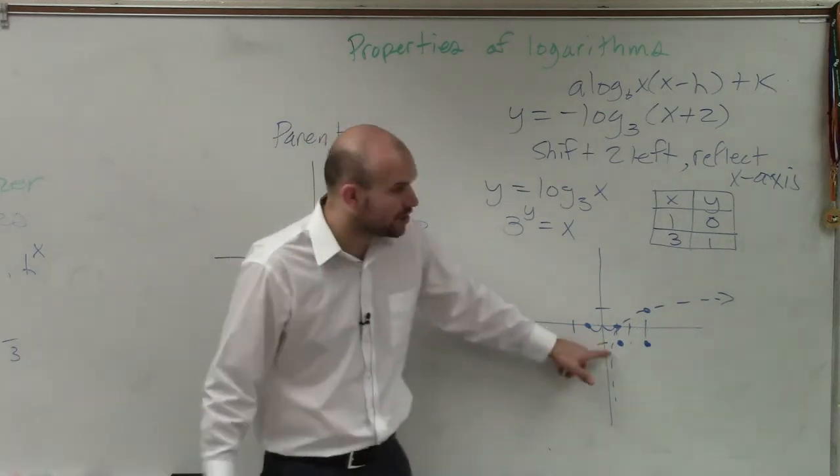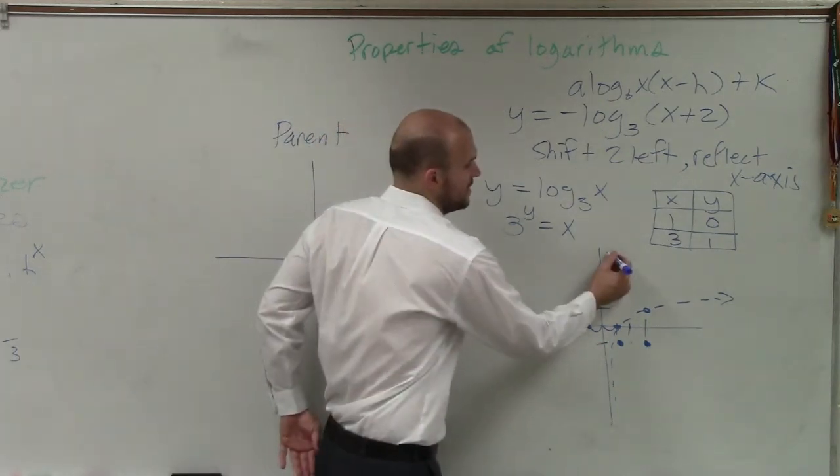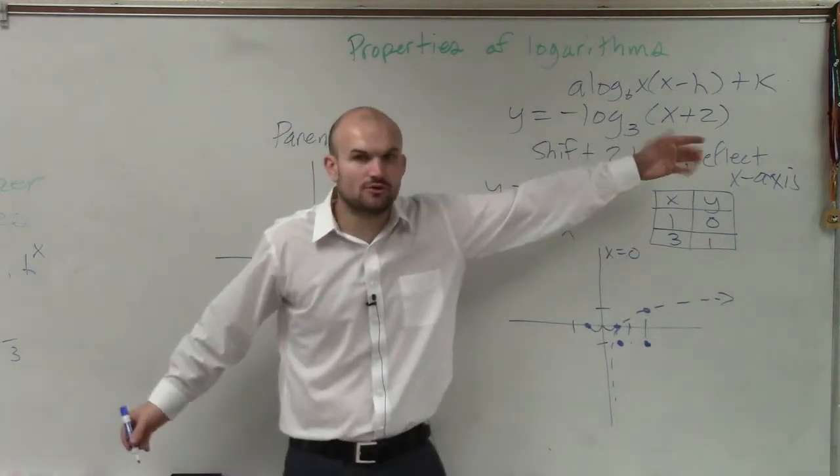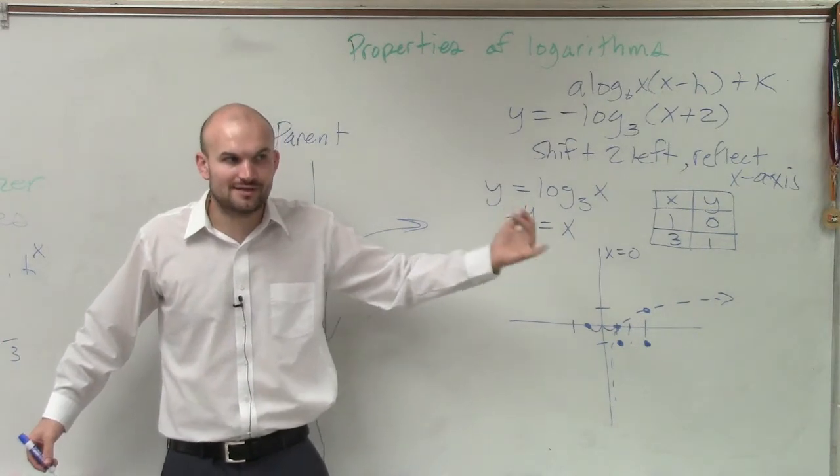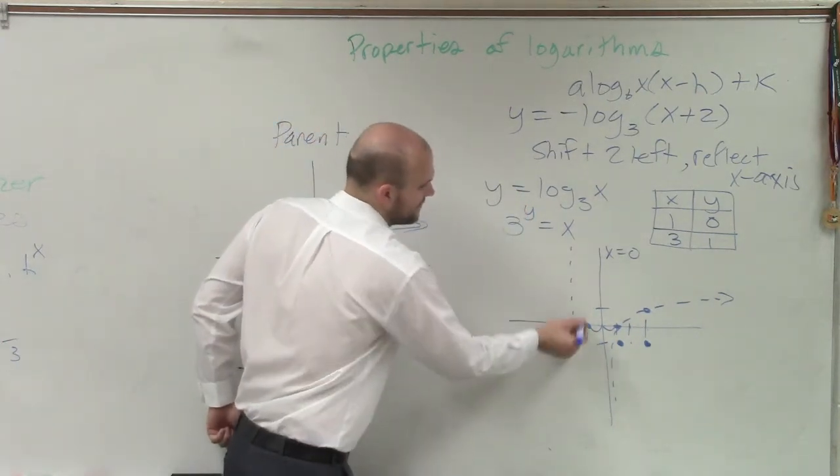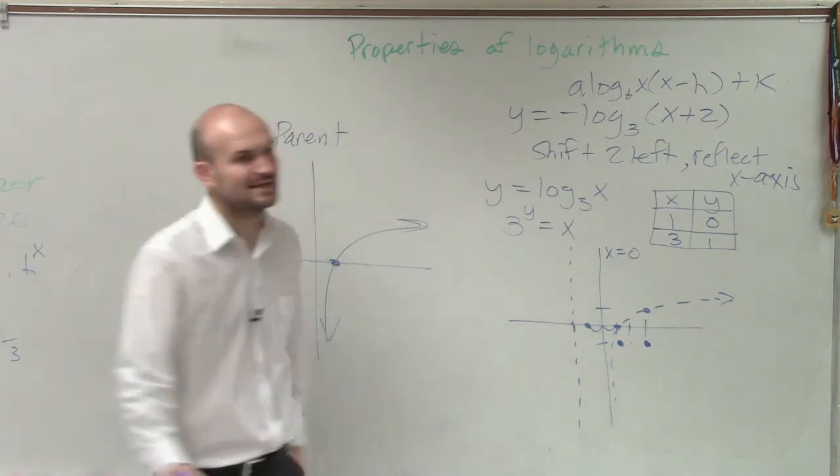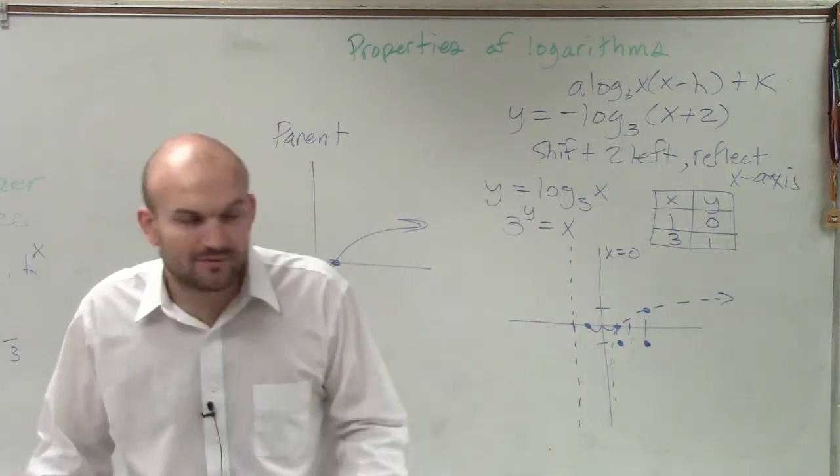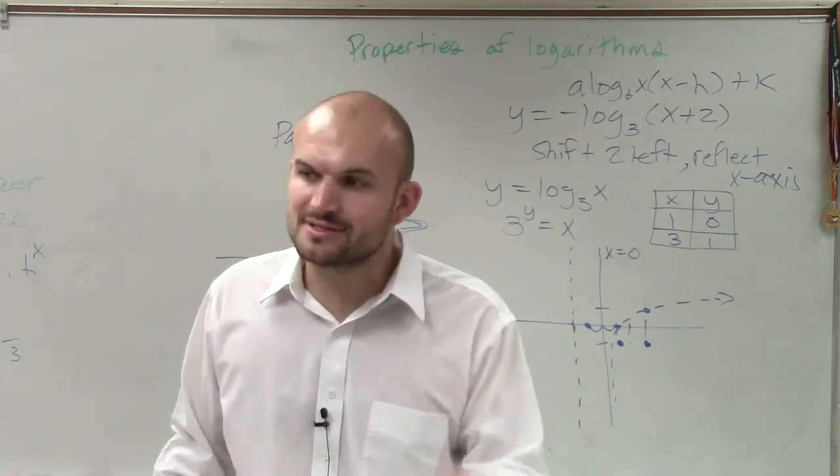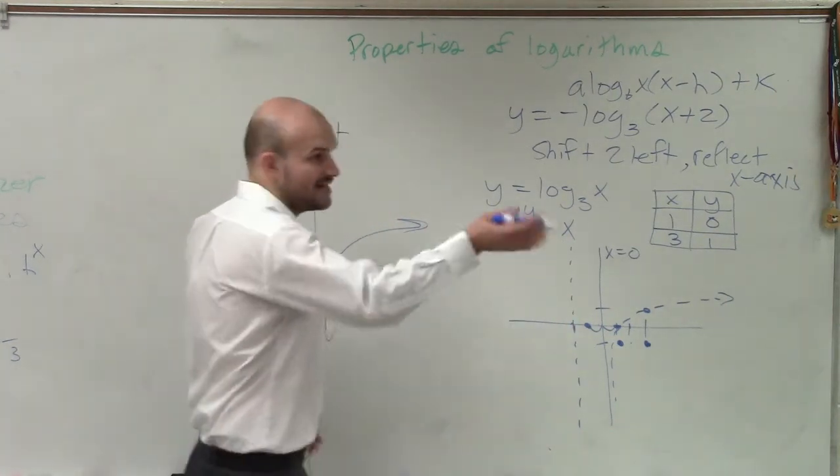Now you can see this asymptote. The asymptote used to be at x equals 0. Well, if I shift left 2, where is my new asymptote? x equals negative 2. And please, guys, graph the asymptote. Make sure you plot that in there. It's easy not to plot it when it's on the axes. But if we've been shifting and we have a new asymptote, draw that asymptote. That's telling us where the graph is approaching.